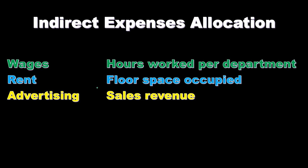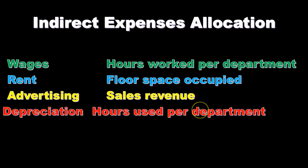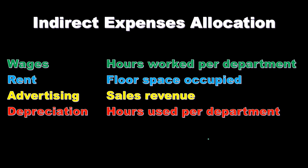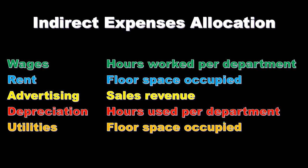For depreciation — say depreciation on equipment used by multiple departments — we might use hours used per department. We would track the hours used for the piece of equipment, add them up, and do a ratio analysis comparing hours used in one department versus another. We then apply the depreciation to the appropriate department based on that ratio.